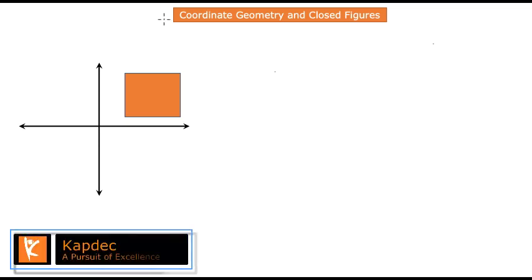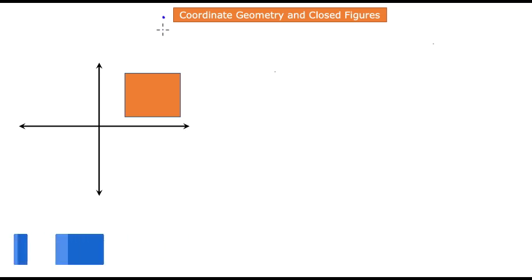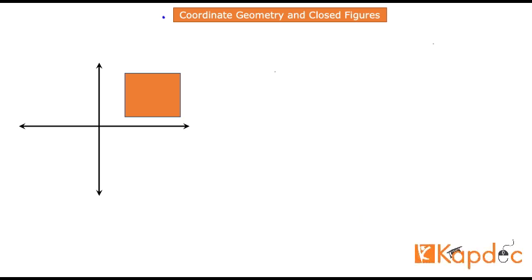Let us talk once again about coordinate geometry and closed figures. Our real objective is to understand what principles in coordinate geometry can be useful in determining what kind of shape we are dealing with. For example, take a look at this diagram we have been provided — it is an XY coordinate plane and we have a shape here.